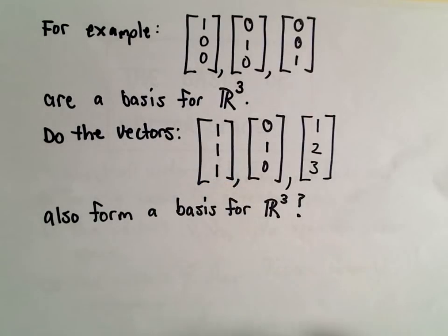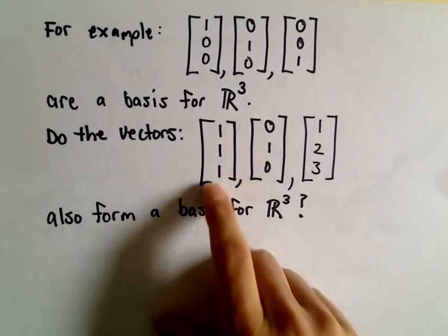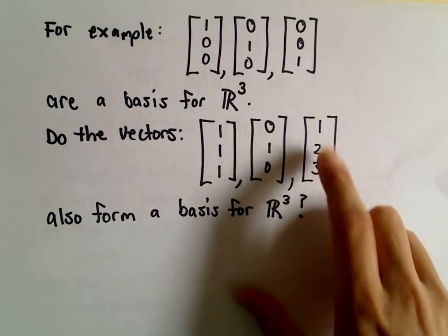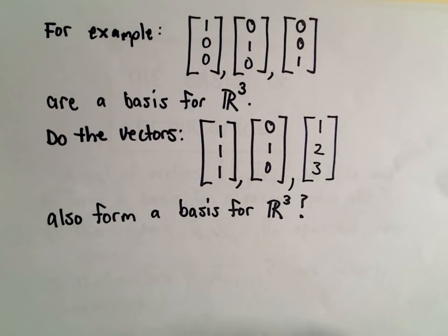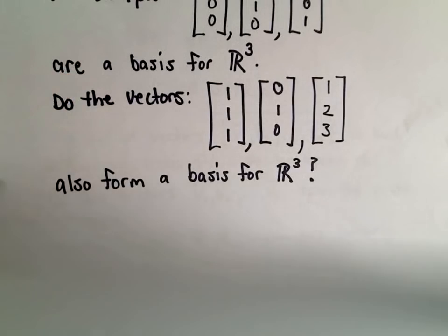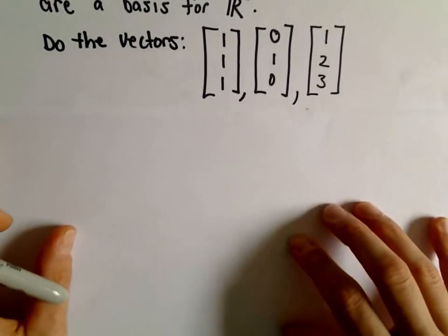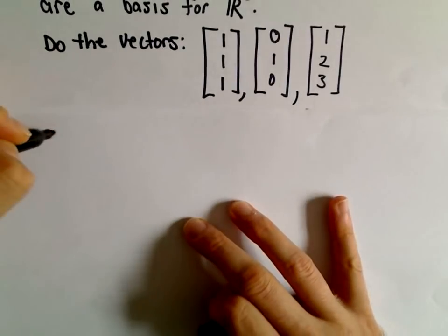I am going to do an example here to determine if these vectors, the vector 1, 1, 1, 0, 1, 0, 1, 2, 3, are those also a basis for R3? Well, I'm going to do two things. I'm going to show that they span R3 or try to, and I'm also going to show that they're linearly independent.